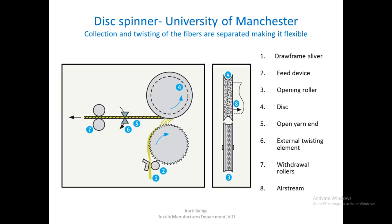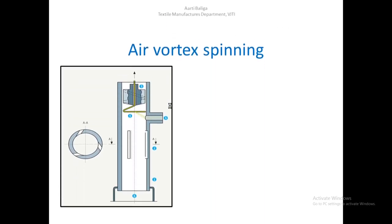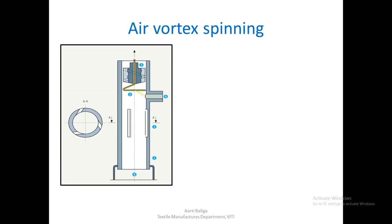In friction spinning, the perforated drums serve as both the collection device and the twisting device. But in disc spinning, the two functions are separated: four is the collection device, whereas six is a separate twisting element. This is the only difference between friction and disc spinning. Friction spinning is popular enough, whereas disc spinning was never developed to the commercial level.